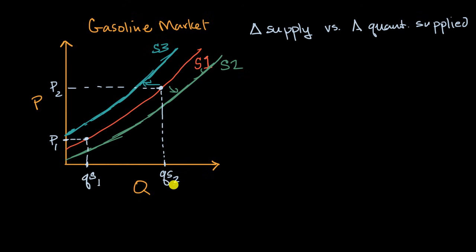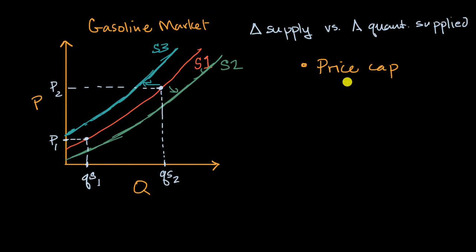Now let's do some tangible examples and think about whether each scenario results in a change in supply or a change in quantity supplied. Let's say the government decides that gas prices are too high and institutes a price cap. A price cap might say that the current price is at P2, and the price cap is at P3. The government says no one is allowed to charge more than P3 for gasoline. What would that result in — a change in supply, or a change in the quantity supplied?